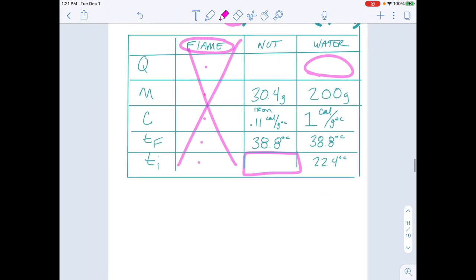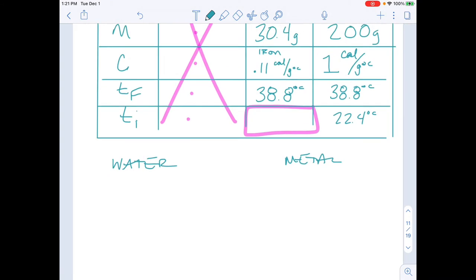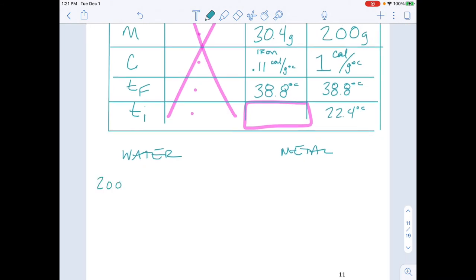So now we can start putting all of this into the equation. It doesn't necessarily matter which side you put it on. I could put the water on this side and let's say I'm going to put the metal or the nut on this side. And let's lay out my information. My water's 200 grams. Specific heat of one. Temperature final of 38.8. And temperature initial of 22.4. Set that equal and opposite negative to the metal information. The metal had a mass of 30.4.